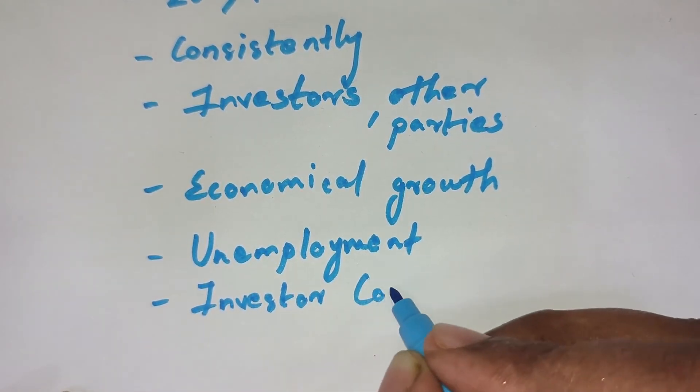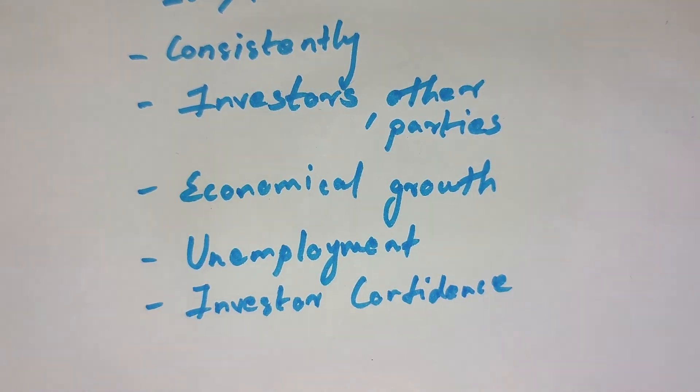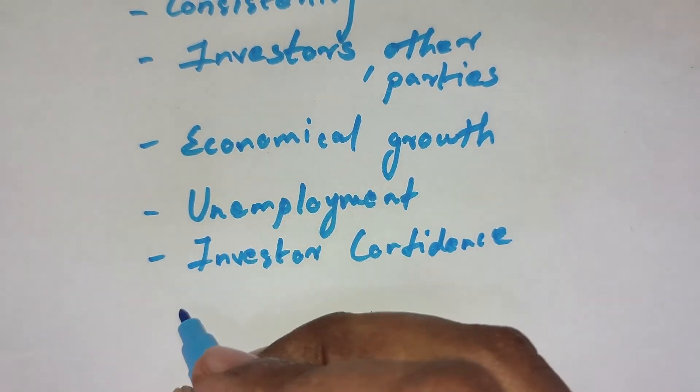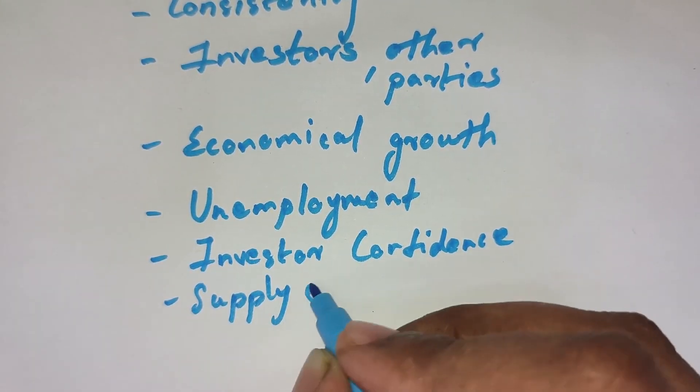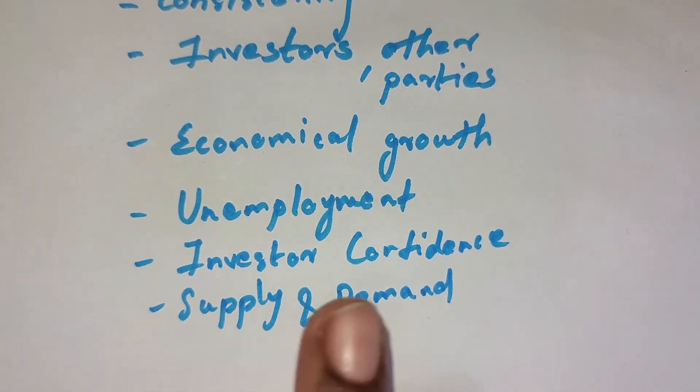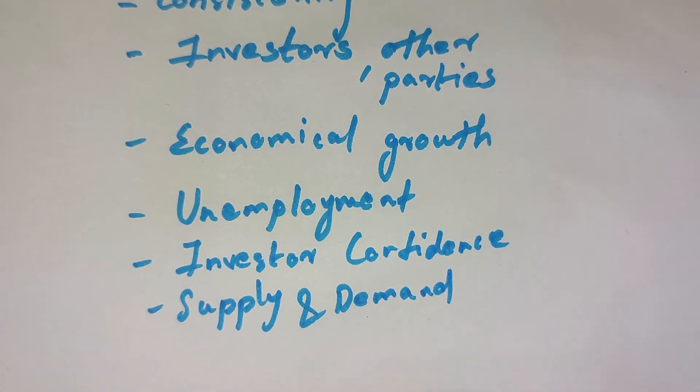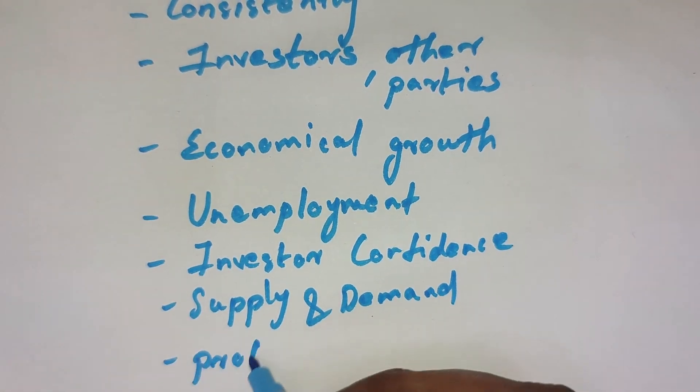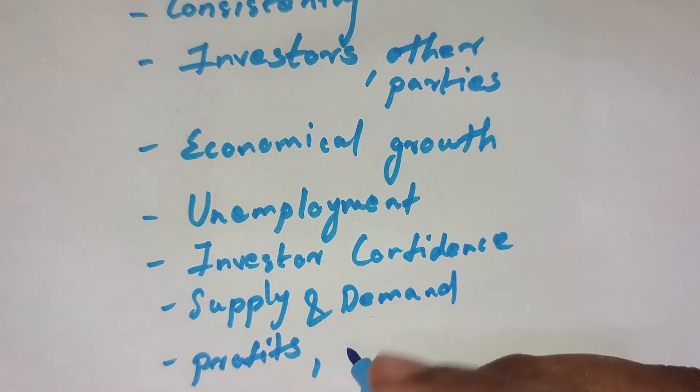Investor confidence increases over that market. So due to this confidence, the supply and demand chain gets affected. As I see here, economical growth and unemployment to be in place which will often result in huge profits and a strong GDP, resulting in huge profits and a strong GDP.